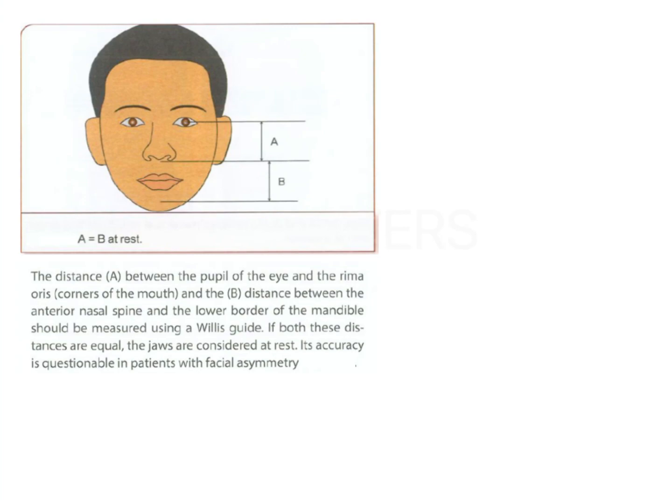So for a patient, the distance between the pupil of the eye and the rima oris of the corner of the mouth is equal to the distance between the anterior nasal spine and the lower border of the mandible. So if you measure them, you will get the desired vertical dimension at rest. This is known as Willis guide. Its accuracy is questionable in patients with facial asymmetry. That is the disadvantage. So this is A and this is B.